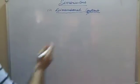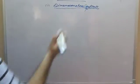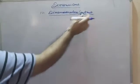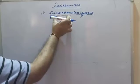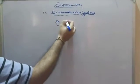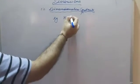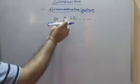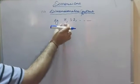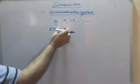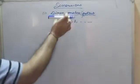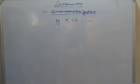The third type is dimensionless constant — the value is constant but does not have any dimensions. For example, π (= 22/7), and pure numbers like 1, 2, etc. Pi has a fixed value and these numbers are constants, so they are called dimensionless constants.